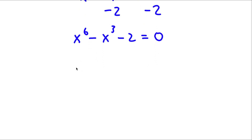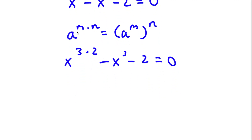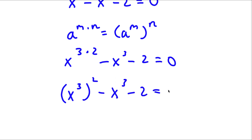Now if I have something in the form a to the power of m times n, this is equal to a to the power of m to the power of n. So in this case x to the power of 6 we can rewrite as x to the power of 3 times 2, which equals x to the power of 3 to the power of 2, minus x to the power of 3 minus 2 is equal to 0.